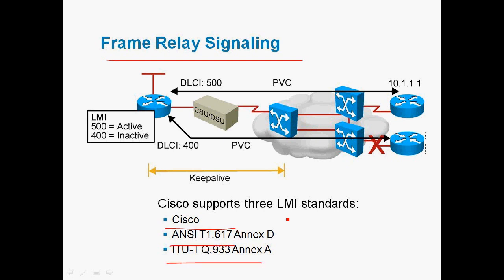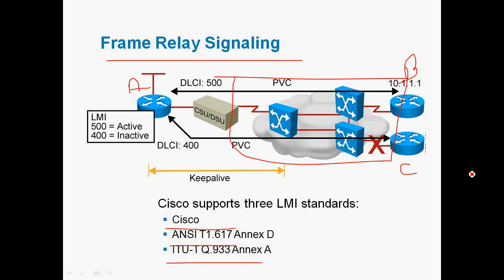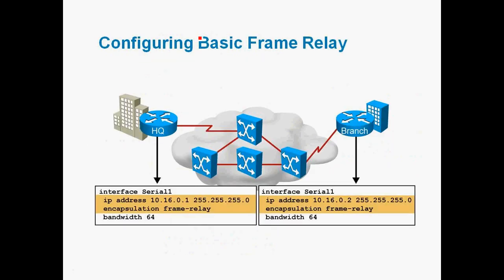Cisco supports three LMI standards: Cisco, ANSI, and ITU-T. With Router A, Router B, and Router C connected through the frame relay cloud, LMI is locally significant — meaning the LMI standard used between Router A and the cloud can be Cisco, while Router B and the cloud can use ANSI. They can work independently. That is why LMI is locally significant; cisco supports three types of LMI standards: Cisco, ANSI, and ITU-T.